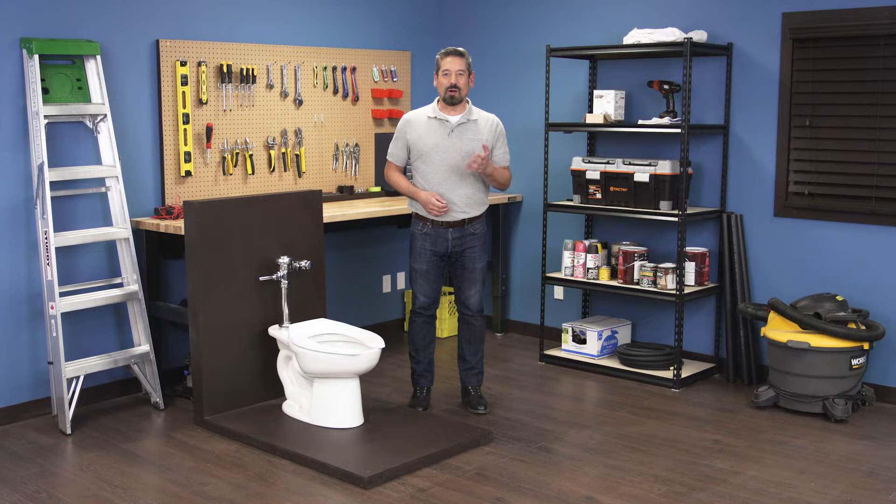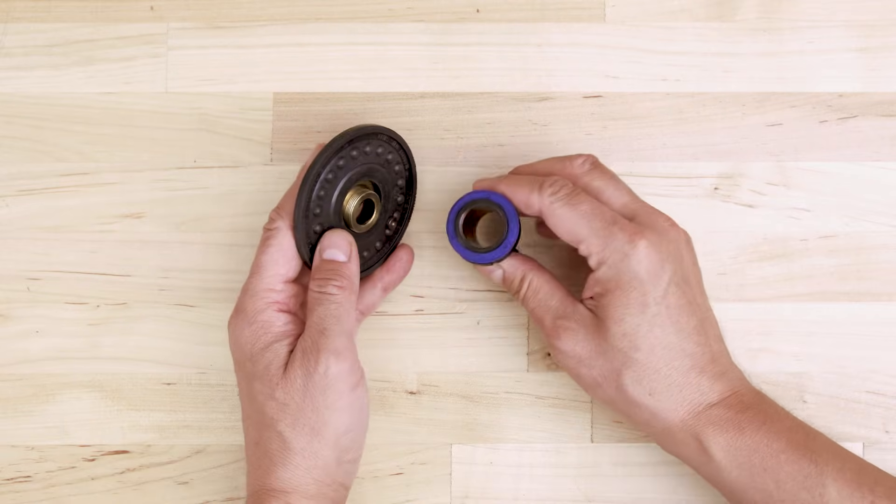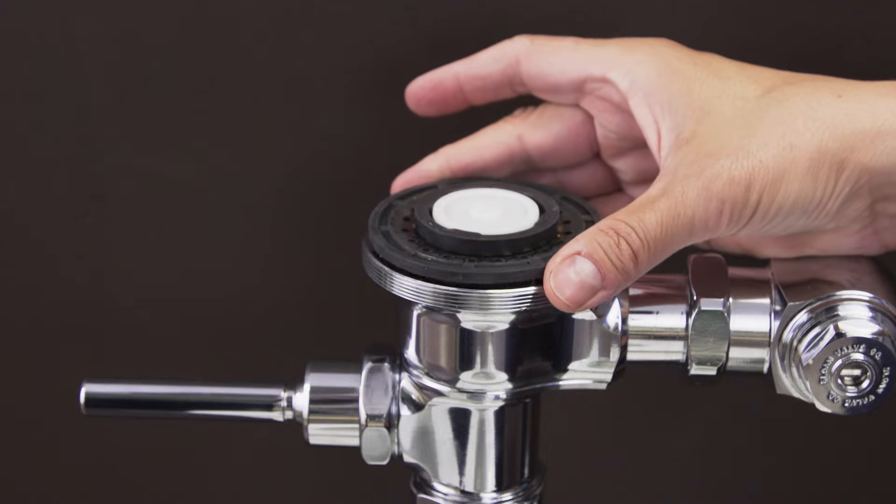Hi, I'm Vance, and welcome back to Repair and Replace. In this episode, I'll show you how to replace the diaphragm in a Sloan Regal or Royal flushometer. This applies to both urinals and water closets, as the models are nearly identical except for the spud diameter and size.